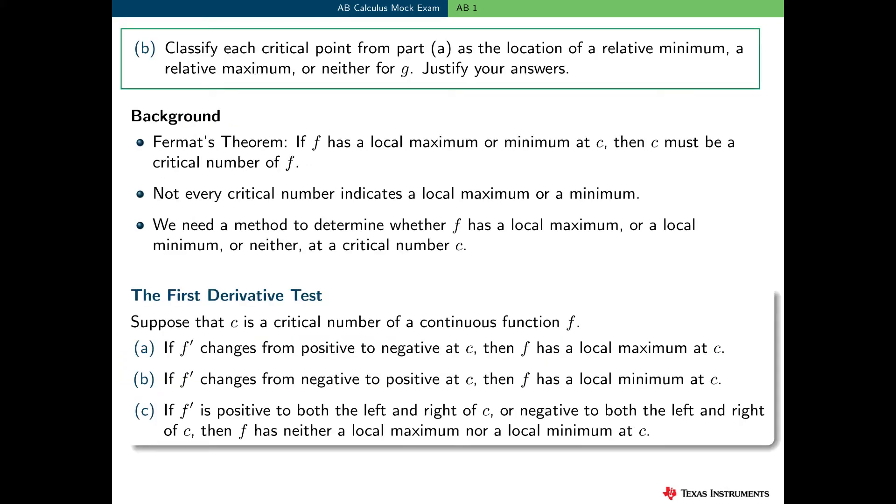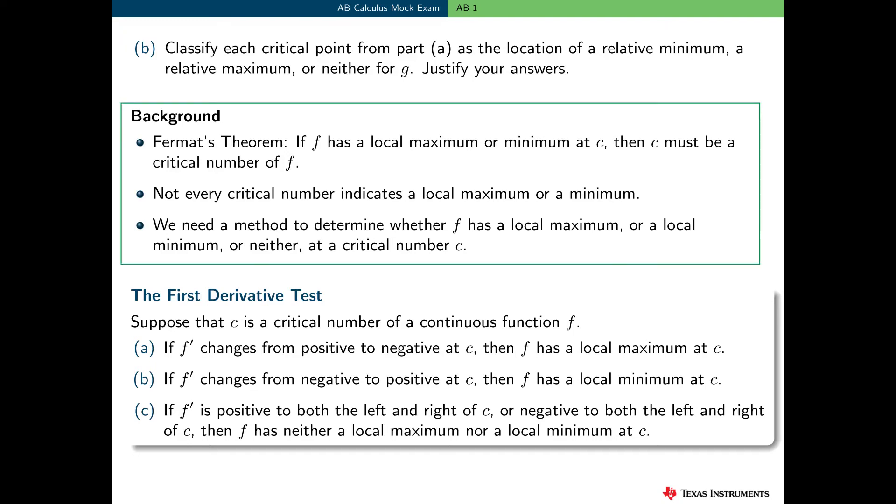Part B of form AB1 asks students to classify each critical point from part A as the location of a relative minimum, a relative maximum, or neither for G. And we need some justification here.